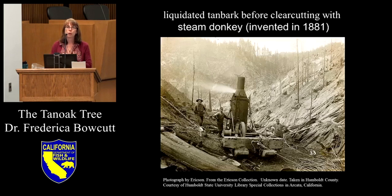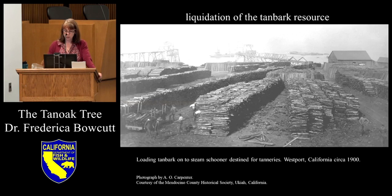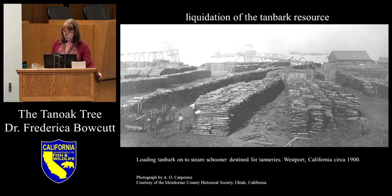Clear-cutting is not a recent phenomenon. When the steam donkey was invented in 1881, everything between it and the log being pulled was destroyed. There was no way to argue for conservation of little tan oaks because they would be mowed over. Even though California state-employed foresters spoke out against the wasteful practices of extracting tan oak bark, it had no purchase because it was driven by the commercialization and industrialization of softwood production. The resource was essentially liquidated — they would use a steam donkey before logging conifers to pull out the bark, in unbelievable volumes.